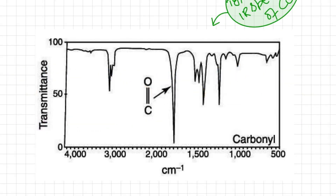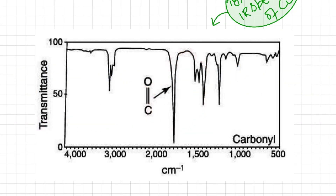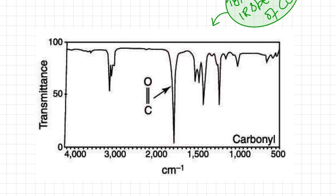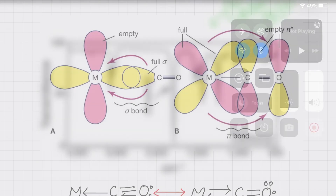This diagram shows the prominent carbonyl peak in the IR spectrum. Due to the high intensity of this peak, we use IR spectroscopy to obtain information about whether backbonding exists in a particular metal carbonyl. It is one of the sharpest and most prominent peaks in IR spectroscopy.